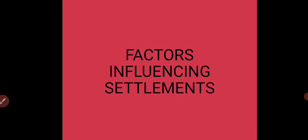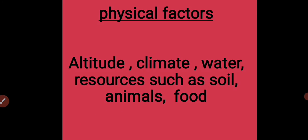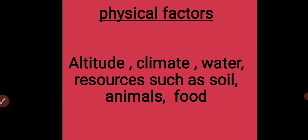The factors influencing settlement: the first factor is physical factors, such as altitude, climate, water, and resources such as soil, animals, and food. These all affect the settlement of human beings.